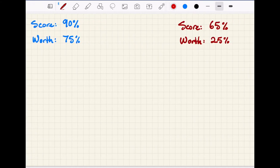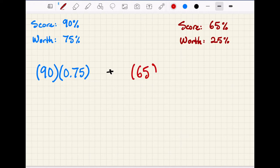In order to do this, we take the score times its proportional weight expressed as a decimal. So 75% translates to 0.75. And we add that to the same thing on our second assignment. We have a score of 65 with a proportional weight of 25%, which is expressed as a decimal as 0.25.